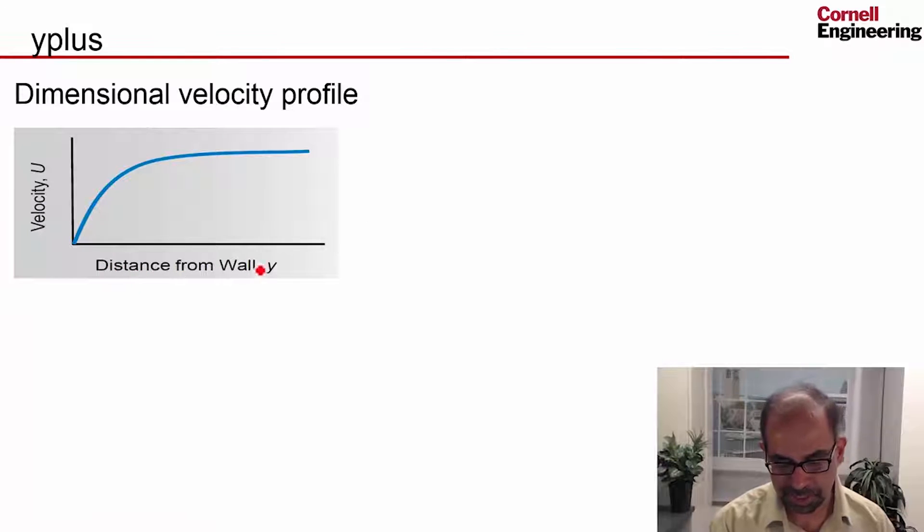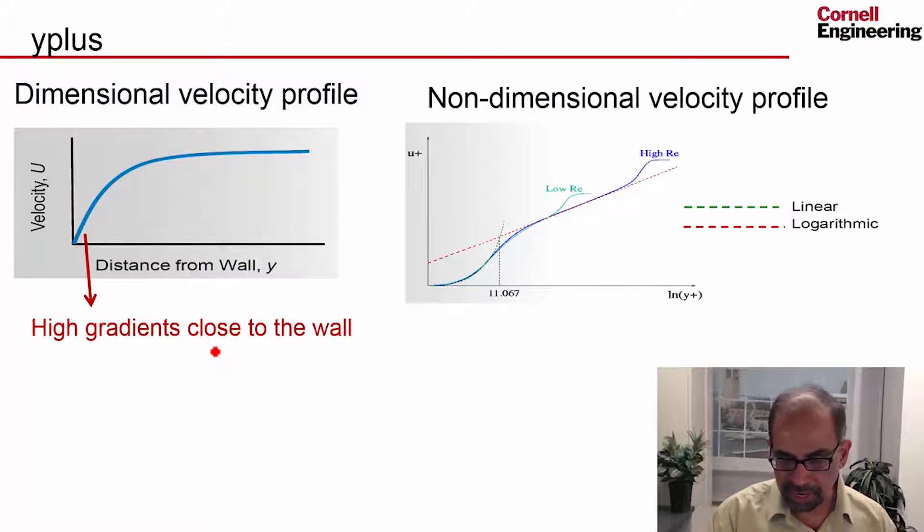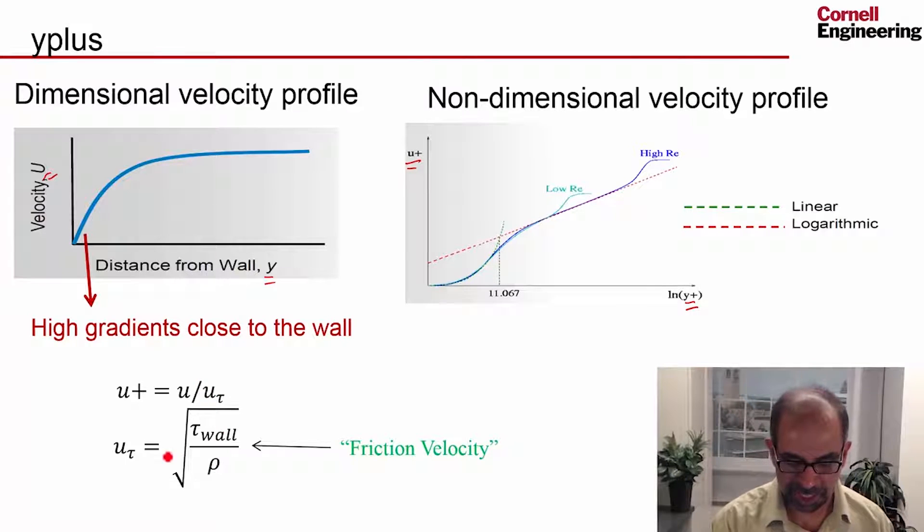So here's a dimensional velocity profile. This is the distance from the wall, and that's a velocity. Again, as I'm coming off the wall, the velocity increases rapidly, and I get high gradients close to the wall. And then I go, and I can plot this as a non-dimensional velocity profile. So I go from the velocity, the dimensional velocity, to a non-dimensional velocity called U plus. And I go from the non-dimensional distance, the dimensional distance to a non-dimensional distance, Y plus. And this is plotted as U plus over log Y plus versus log Y plus. And the non-dimensionalization of the velocity with respect to a velocity scale, which is called the friction velocity, and it's calculated this way. It's calculated from the wall shear. It's not a velocity. It has a dimension of velocity.